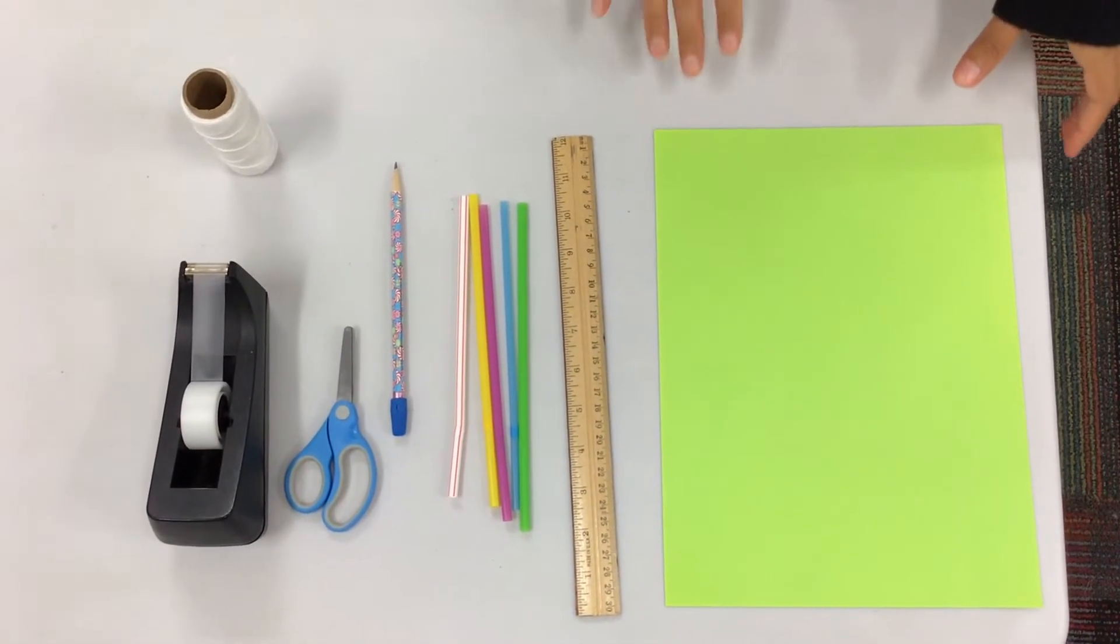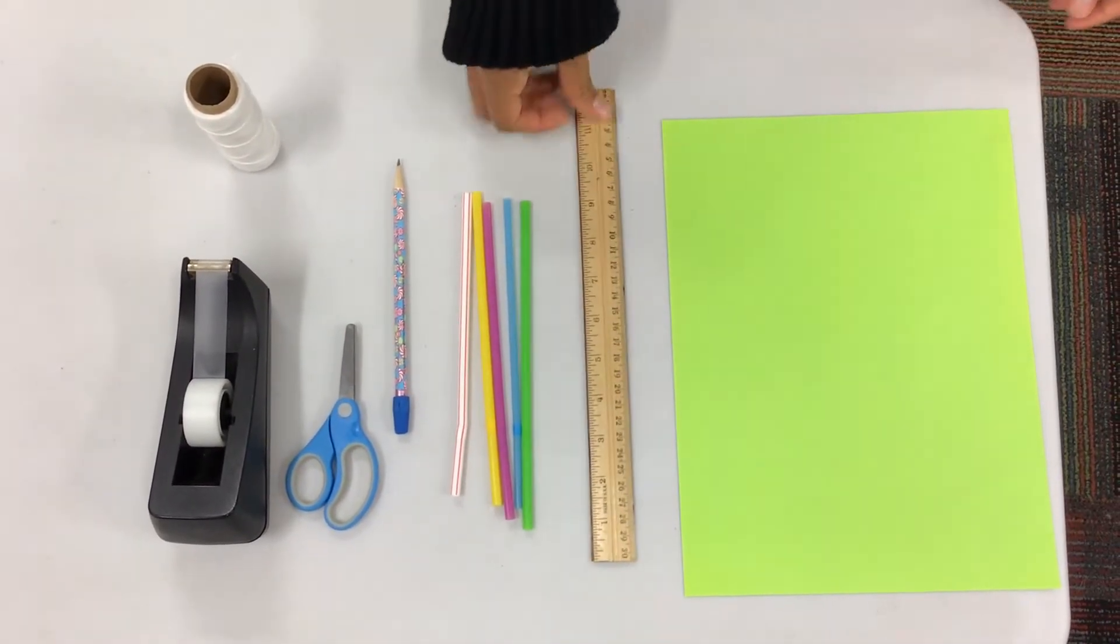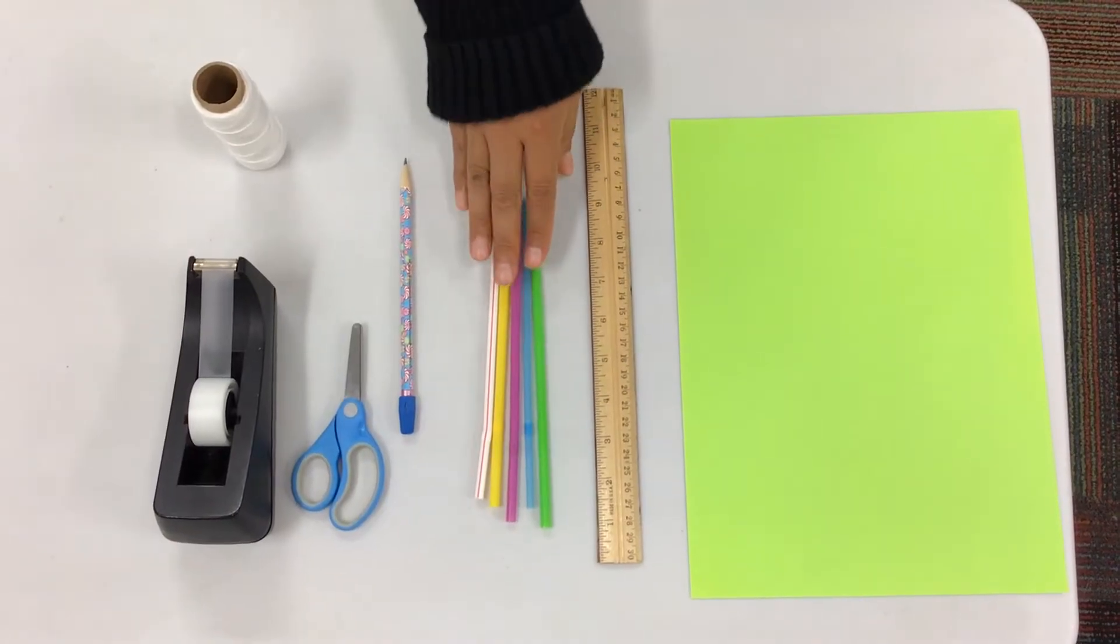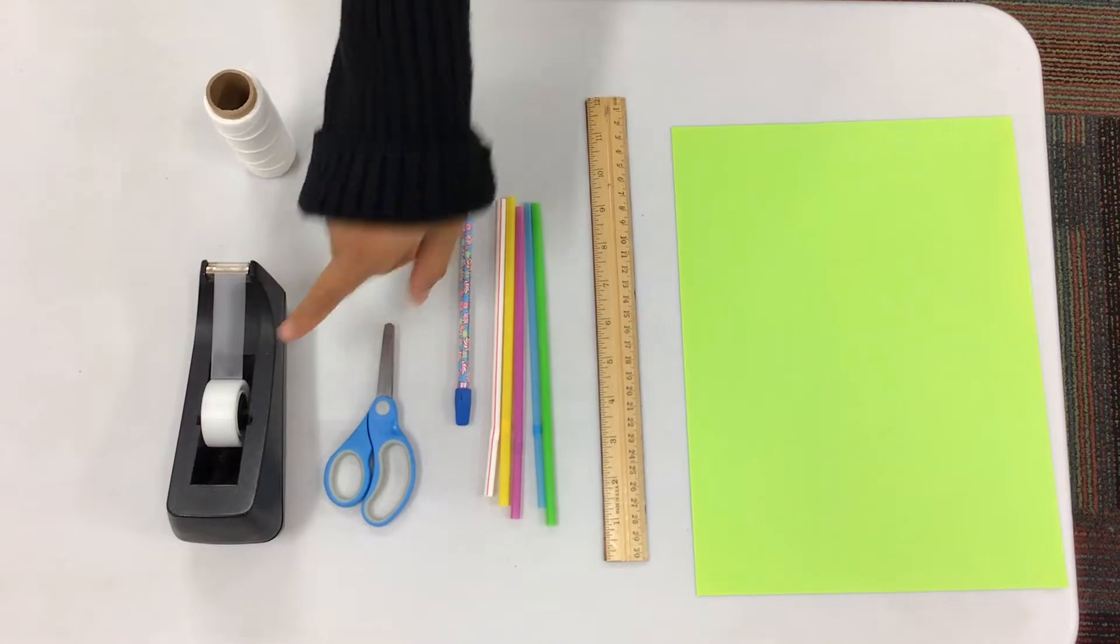What you will need to build a robotic hand is construction paper, a ruler, five straws, preferably different colors, a pencil, scissors, tape, and yarn.